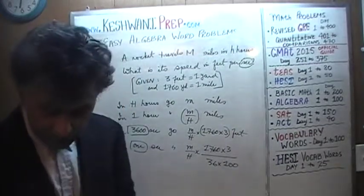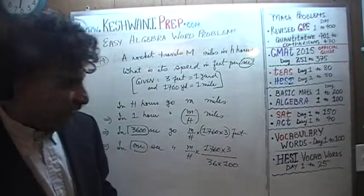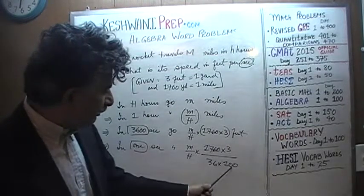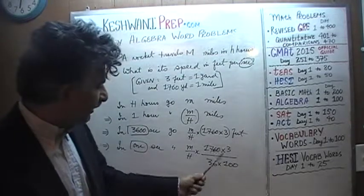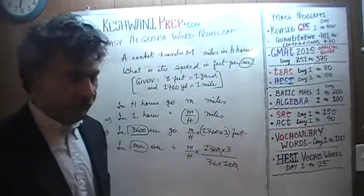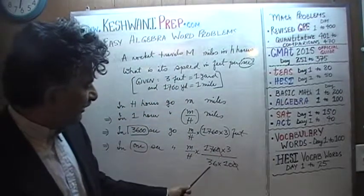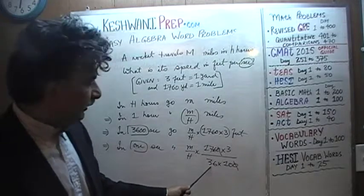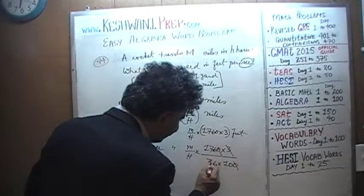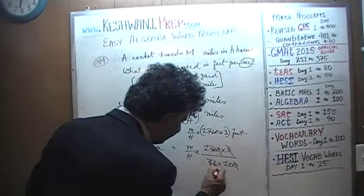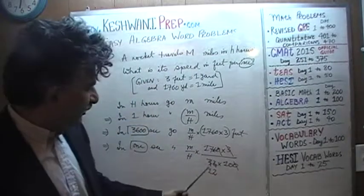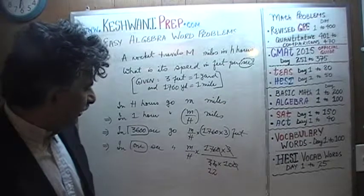All we have to do now is simplify. We see a zero on the top and a zero on the bottom, so let's divide top and bottom by 10 — the zeros go away. Then I see 3 on the top and 36 on the bottom; let's divide top and bottom by 3. Three has one three, and 36 divided by 3 is 12.